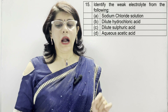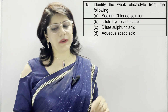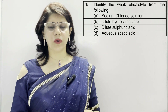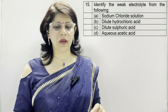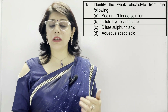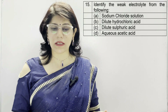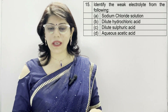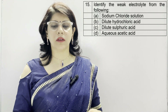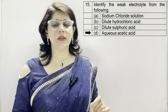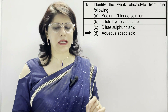Question number 15: identify the weak electrolyte from the following. Option A: sodium chloride solution. B: dilute hydrochloric acid. C: dilute sulfuric acid. D: aqueous acetic acid. The weak electrolyte among these is option D — aqueous acetic acid.